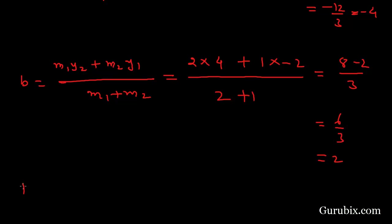Therefore the coordinates of D are (-4, 2). So these two points C(-1, 0) and D(-4, 2) trisect the line segment joining the points A and B. This is the solution of the example.